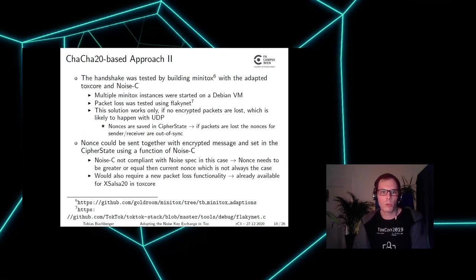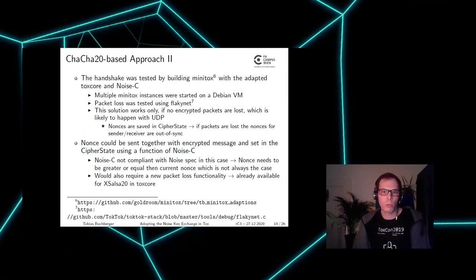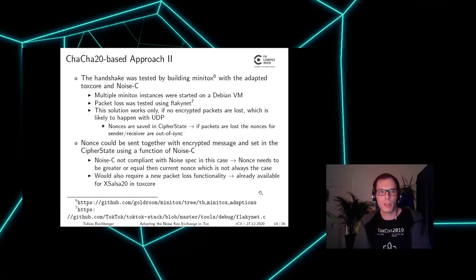The solution to the packet loss problem could be to send the nonce together with each encrypted message and update the cipher state accordingly using a noise-c function. However, I discovered that the noise-c library is not compliant with the Noise specification in this case, because the nonce needs to be greater than or equal to the current nonce in the cipher state, but this is not always the case with out-of-order packets. Also, implementing new packet loss functionality is redundant since ToxCore already has existing packet loss functionality based on XSalsa20 — which leads to my second implementation approach.